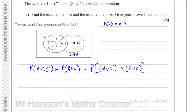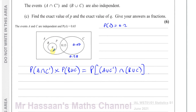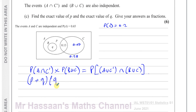A ∩ C' means it has to be in A but outside of C — that's the region P + Q. B ∪ C is Q plus all of circle C, which is 0.2. So B ∪ C = Q + 0.2.